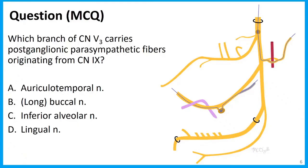Here's our question: which branch of V3 carries postganglionic parasympathetic fibers originating from cranial nerve 9, the glossopharyngeal nerve? Is it the auriculotemporal nerve, buccal nerve, inferior alveolar nerve, or lingual nerve? The correct answer is the auriculotemporal nerve — thinking back to the pathway coming down through the lesser petrosal nerve, through the foramen ovale and the otic ganglion, with those postganglionic fibers then following the auriculotemporal nerve.